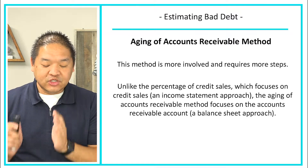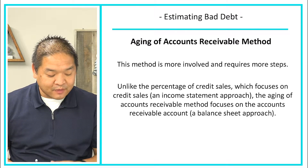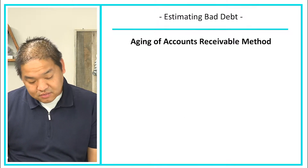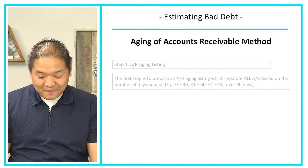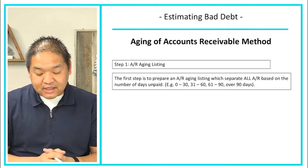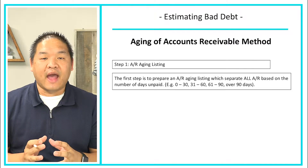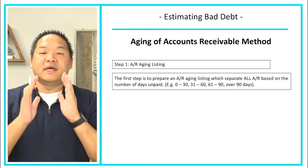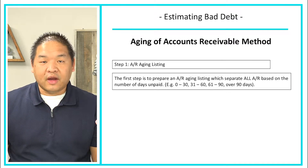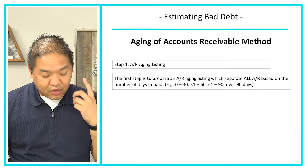Many companies use the AR aging method because it provides more accuracy. The method has four steps. Step one is to prepare an AR aging listing, which separates all accounts receivable based on the number of days unpaid. For example: zero to 30 days, 31 to 60, 61 to 90, and over 90. All accounts receivable are sorted into those blocks.